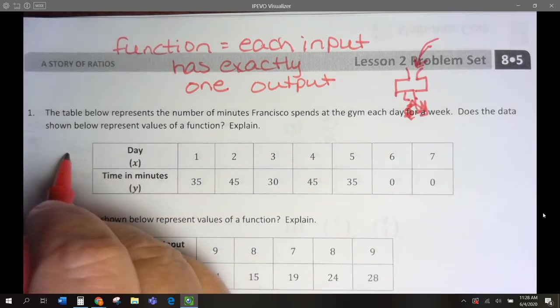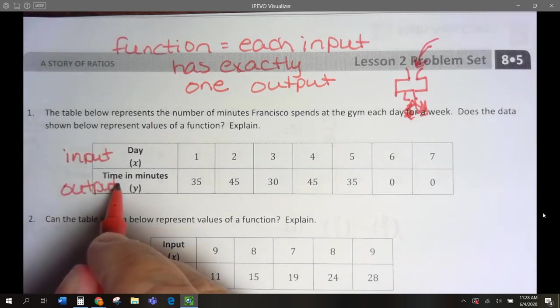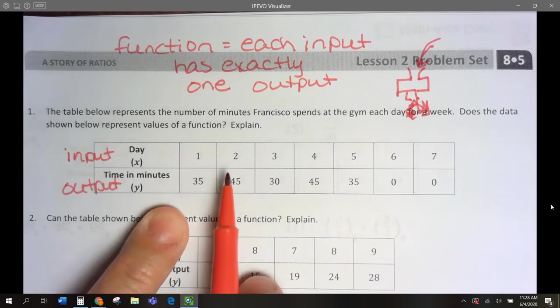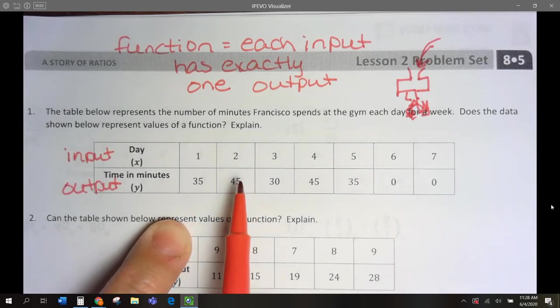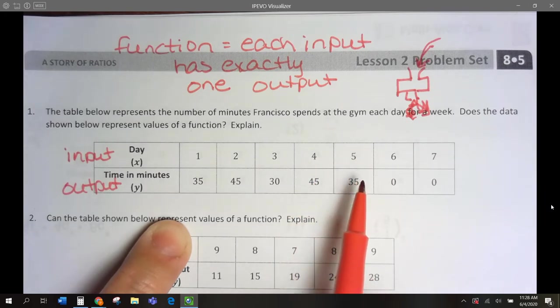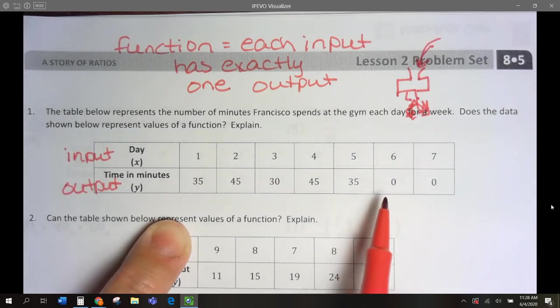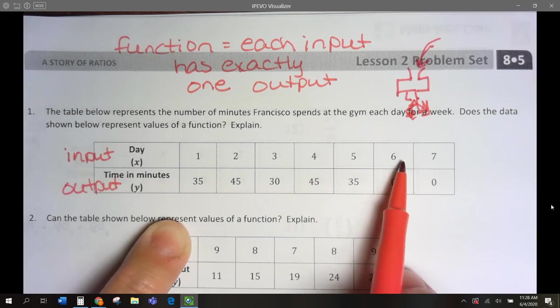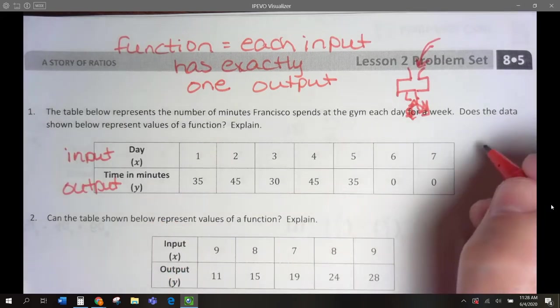This is our input. X is our input. Y is our output. So, do we have any inputs, any of these, giving us more than one answer? There's only one answer for 1. 2 only has one output. 3 only has one output. 4 only has one output. 5 only has one output. 6 only has one output. And 7 only has one output. Notice 6 and 7 have the same output, but that's okay. Each input only has one. Doesn't matter that these are the same because there's different inputs. So yes, this is a function.